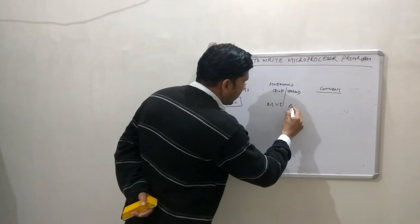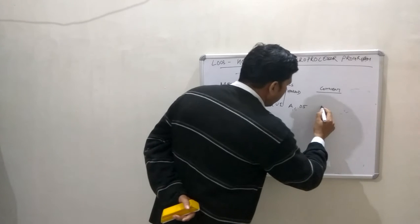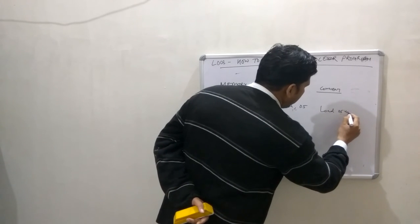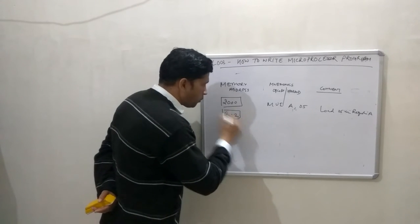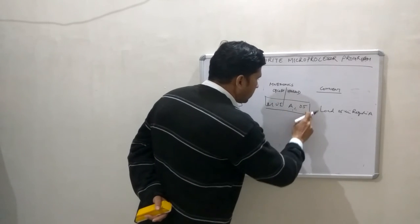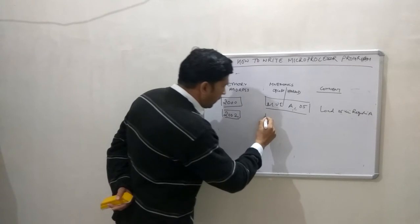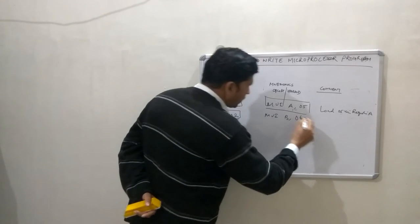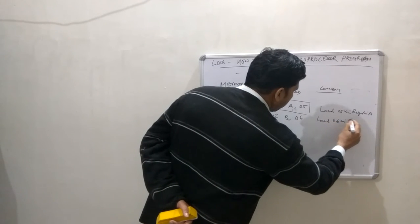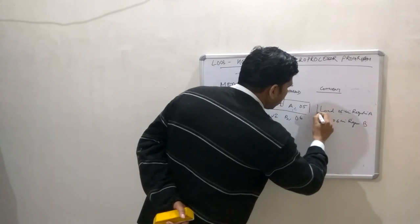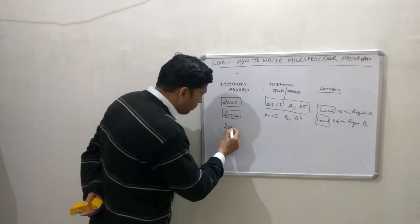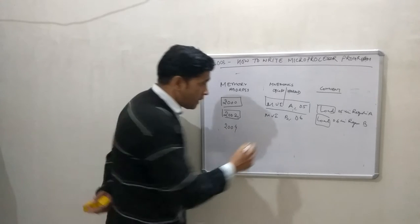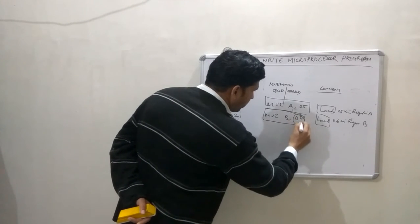At address 2000 I write MVI A, 05 — this means load 05 into register A. The next memory address will be 2002 because this is a two-byte instruction requiring two memory addresses. At 2002 I write MVI B, 06 — this means load 06 into register B. The next memory address will be 2004 because this is also a two-byte instruction since there is 8-bit data.